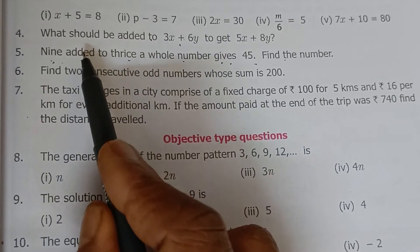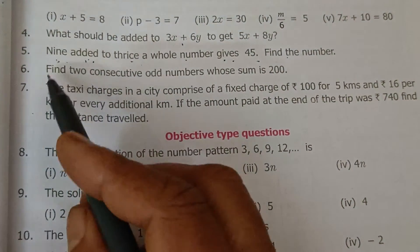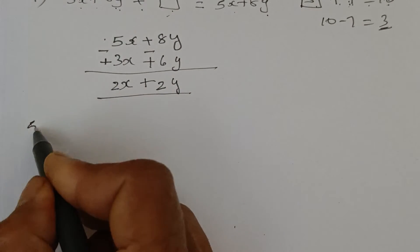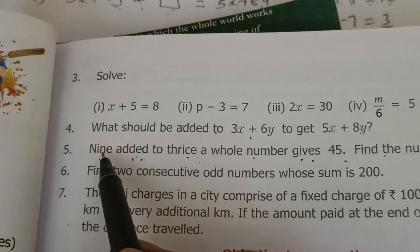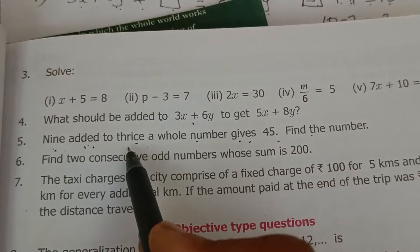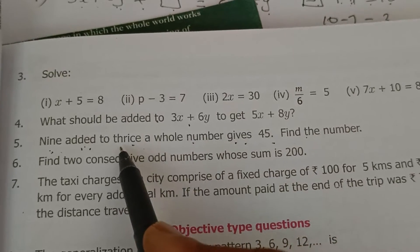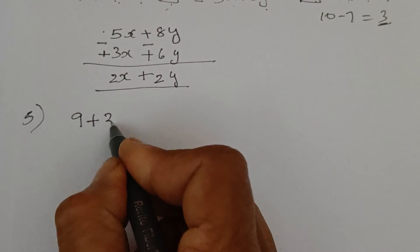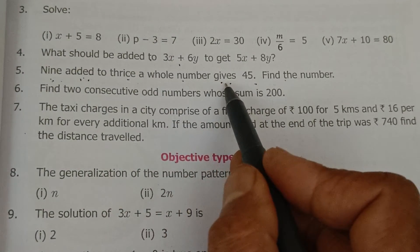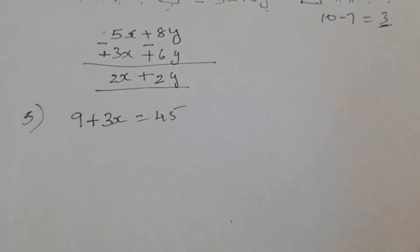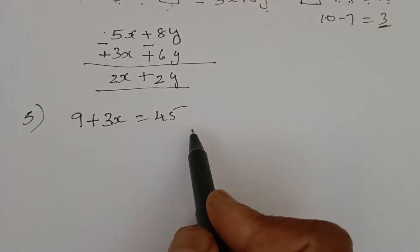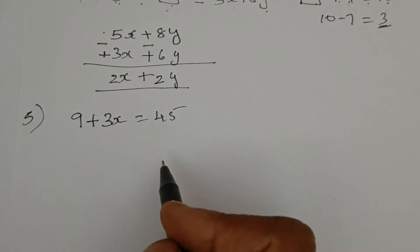For every word in the statement we have a symbol: 9 means the number 9, 'added' means plus, 'thrice a whole number' means 3x, and 'gives' means equals 45. Such a big statement becomes a small simple algebraic equation: 9 + 3x = 45.